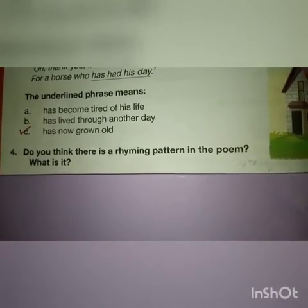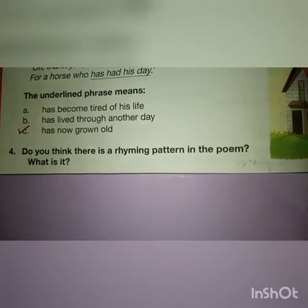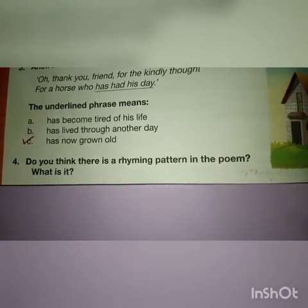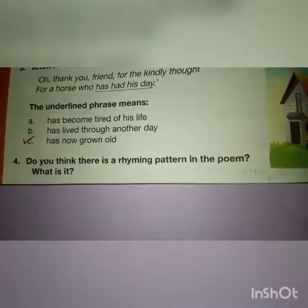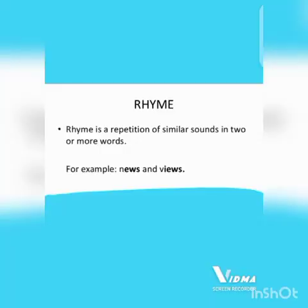Question 4: do you think there is a rhyming pattern in the poem? What is it? Here we need to identify the rhyming pattern. Rhyme is a repetition of similar sounds in two or more words, mostly considered at the end of the lines of poetry. In poetry, the repetition of similar sounds at the end of lines is called rhyme — for example, 'news' and 'views'. The answer is yes, there is a rhyming pattern in the poem.